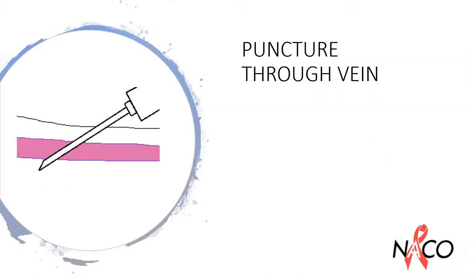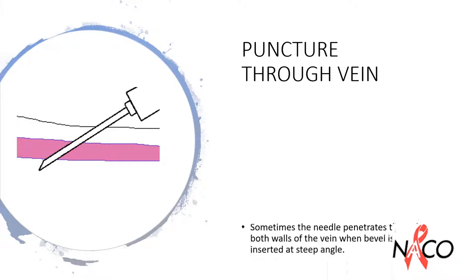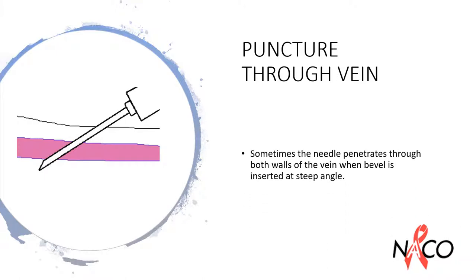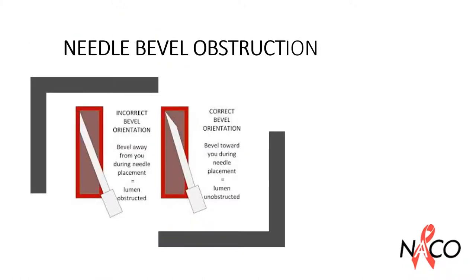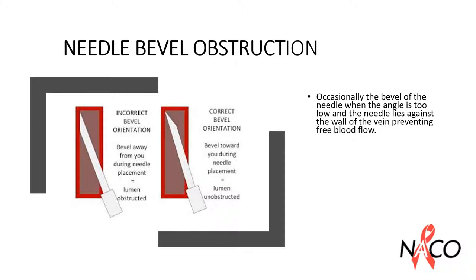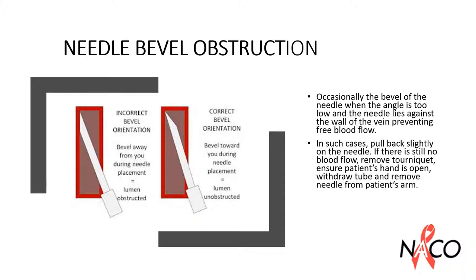Sometimes the needle penetrates through both walls of the vein when the bevel is inserted at a steep angle. Occasionally when the angle is too low, the needle lies against the wall of the vein, preventing free blood flow. In such cases, pull back slightly on the needle. If there is still no blood flow, remove the tourniquet, ensure the patient's hand is open, withdraw the tube, and remove the needle. Avoid rotating the needle more than one-fourth turn as it may damage the vessel wall.